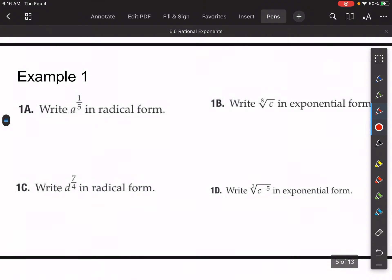So example one. Write a to the fifth in radical form. We simply just say that's the fifth root of a.